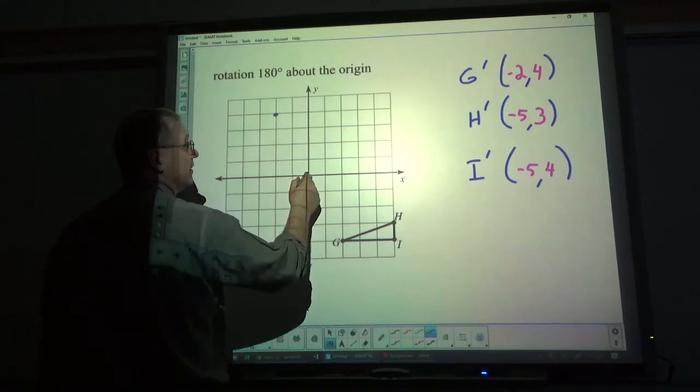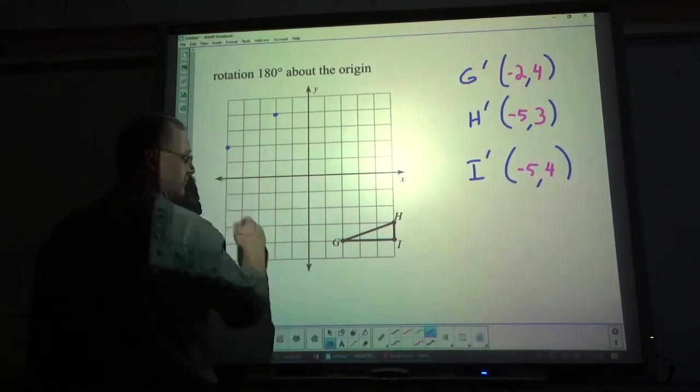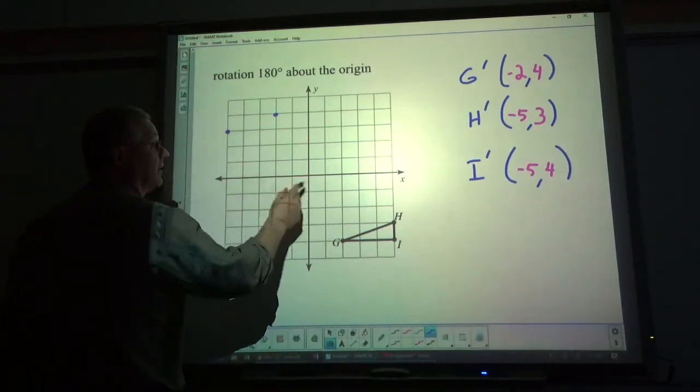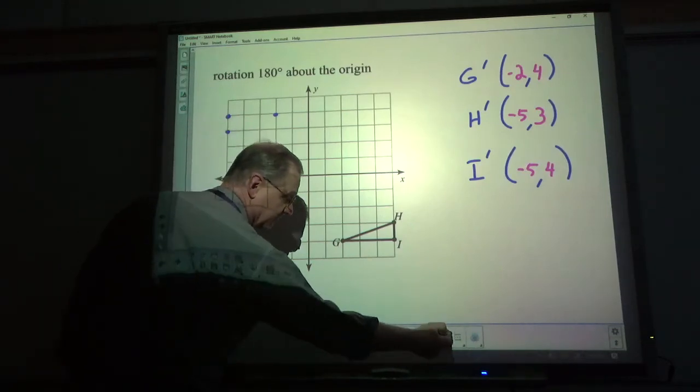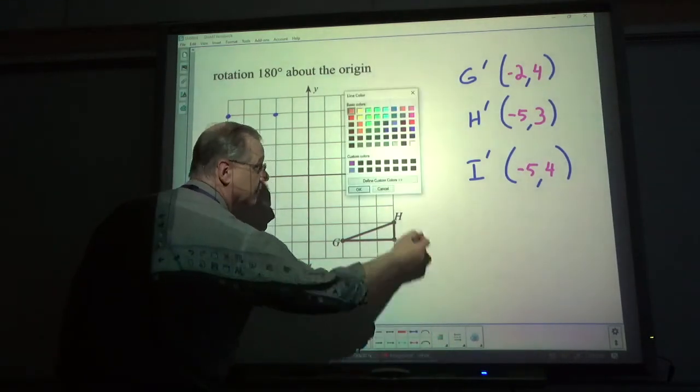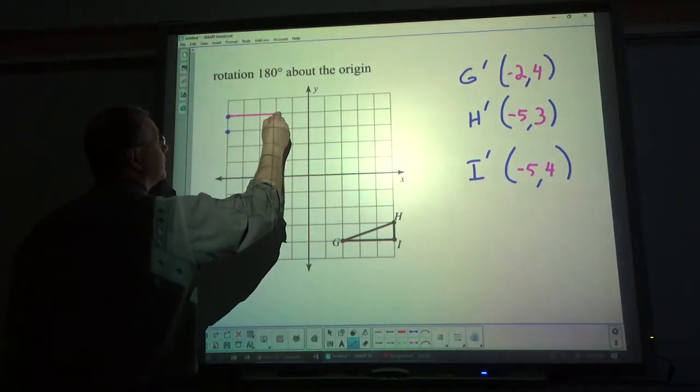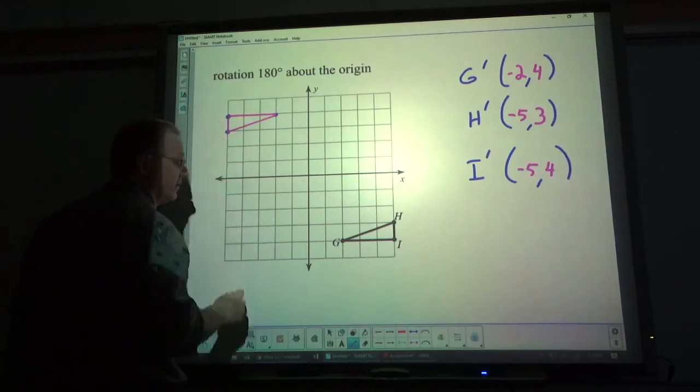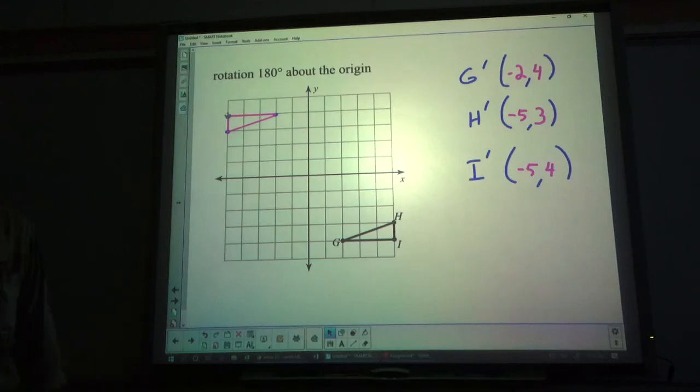Negative 2, 4. Negative 5, 3. And negative 5, 4. And now we'll graph our line. And there you have your table. And that's it for today. Have a great day.